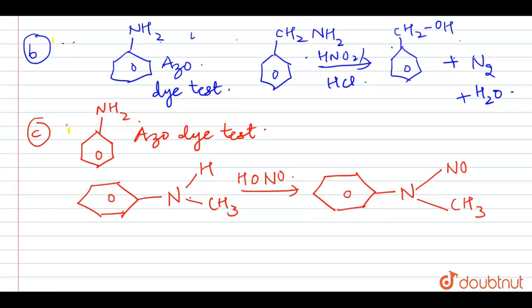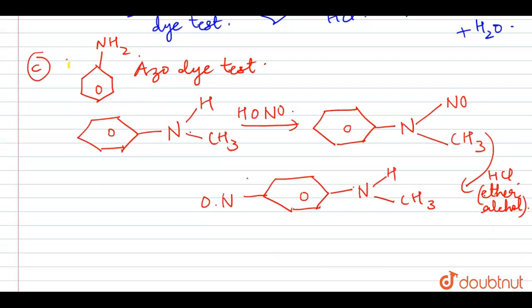On further reaction with HCl in the presence of ether alcohol, it gives out this compound with nitrosyl present. This way, our compound formed is para-nitroso-N-methylaniline. This is the compound formed by the reaction.